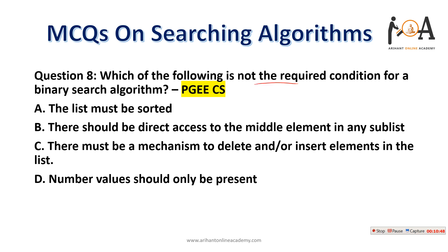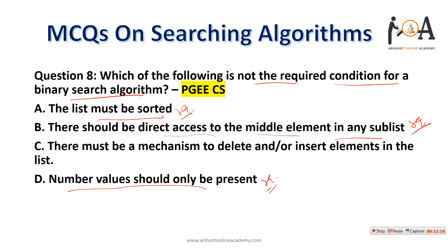Question eight: which of the following is NOT a required condition for binary search? The list must be sorted — required. There should be direct access to the middle element in any sublist — required. Number values should be present — required. 'There must be a mechanism to delete or insert elements in the list' — this is NOT a required condition. Option C is the answer.